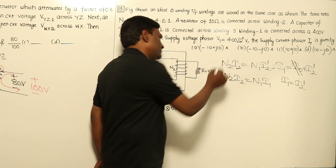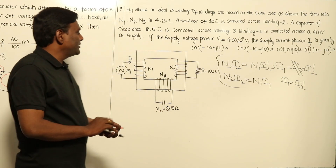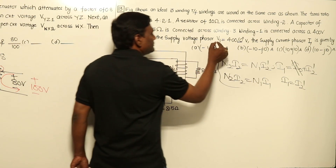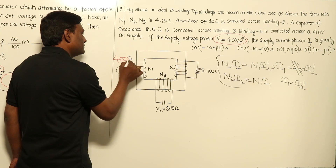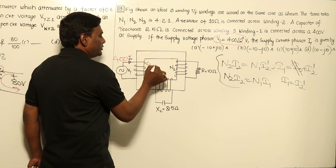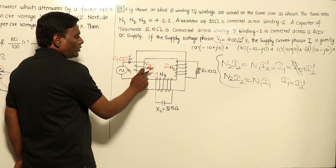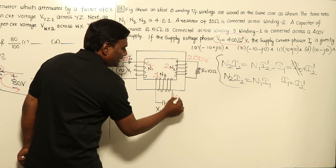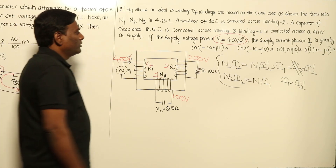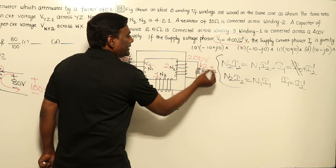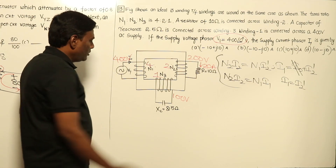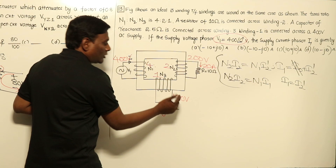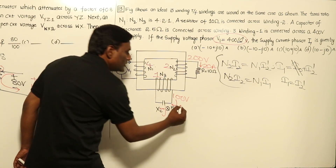With 400 volts applied to the primary and turns ratio N1:N2:N3 = 4:2:1, the secondary gets 200 volts and the tertiary gets 100 volts. Supplying 200 volts across the secondary resistance gives 20 amperes. Supplying 100 volts across the tertiary capacitive reactance Xc = -j2.5 ohms gives 40 amperes.